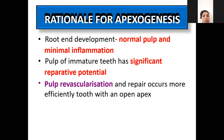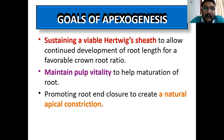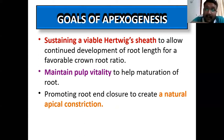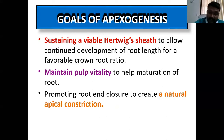The main goal of apexogenesis is sustaining the viable Hertwig's epithelial root sheath — you all know that Hertwig's epithelial root sheath helps in the formation of normal apical closure. Sustaining a viable Hertwig's epithelial root sheath allows improvement of root length, so the entire normal root length and favorable crown-root ratio will also be formed. The second goal is maintaining pulpal vitality helping maturation of the tube, and thirdly, promoting root-end closure to create a natural apical constriction.